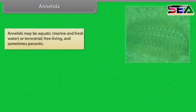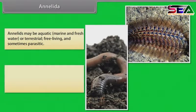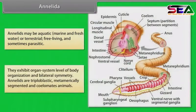Annelida. Annelids may be aquatic, i.e. marine and freshwater, or terrestrial, free-living and sometimes parasitic. They exhibit organ system level of body organization and bilateral symmetry.